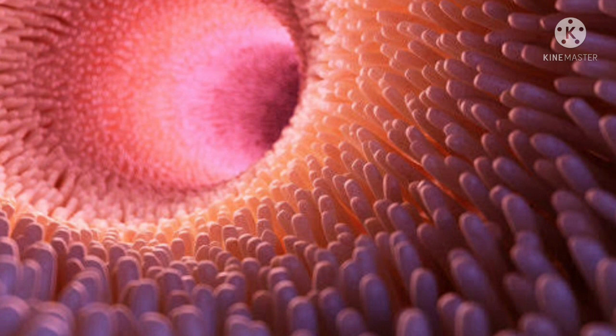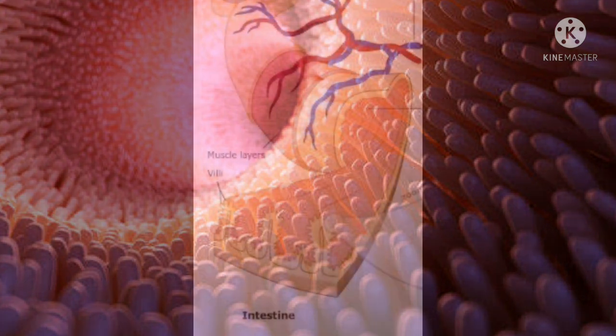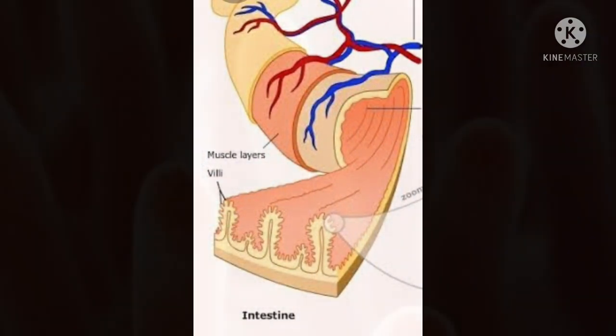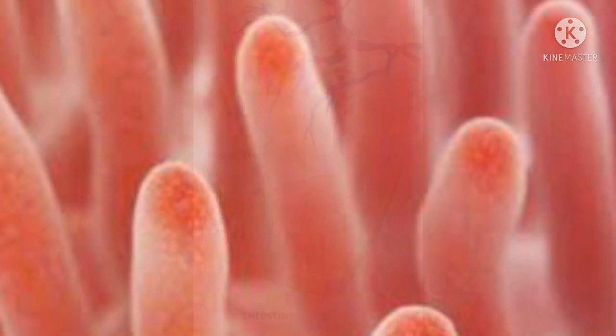The intestinal wall contains a number of finger-like projections called villi. The villi increase the surface area for absorption of nutrients. Villi are covered with a single layer of cells.